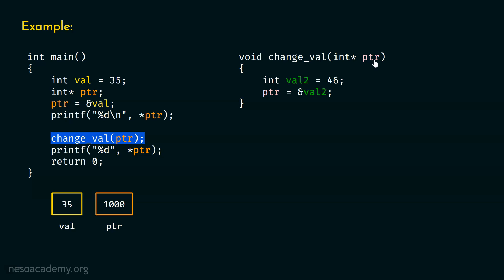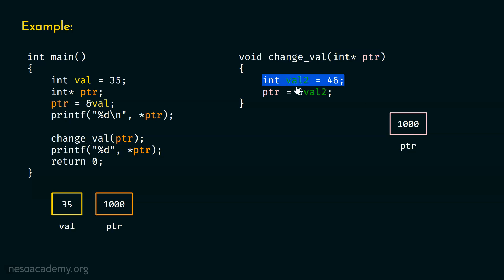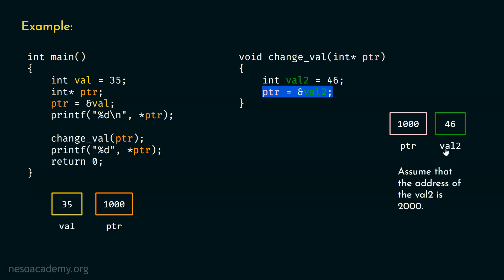This local pointer is a pointer to an integer because we are passing the address of some integer, and there must be a pointer to receive this address. So this pointer will receive the address 1000. After this, in the change_val function, I have declared a variable val2 and assigned it the value 46. This variable is local to this function. Then I have written ptr equals to ampersand val2 — trying to change ptr with the address of val2. Let us assume the address of val2 is 2000, so this address will get replaced by address 2000.